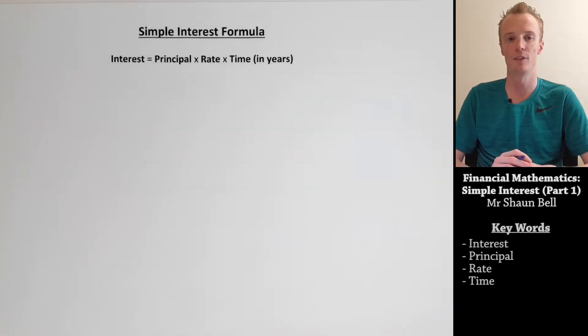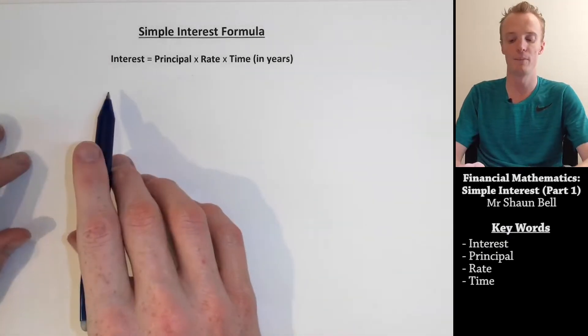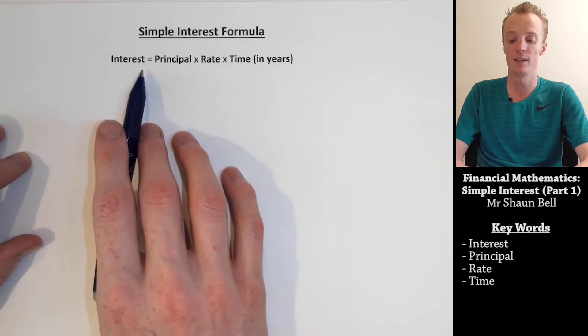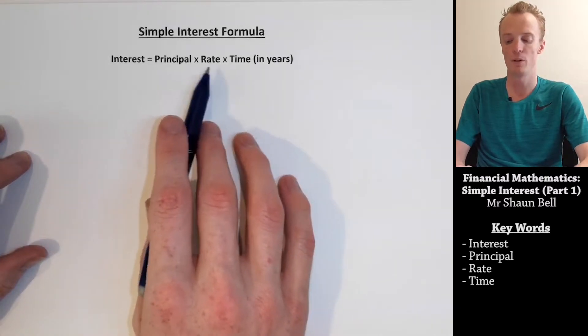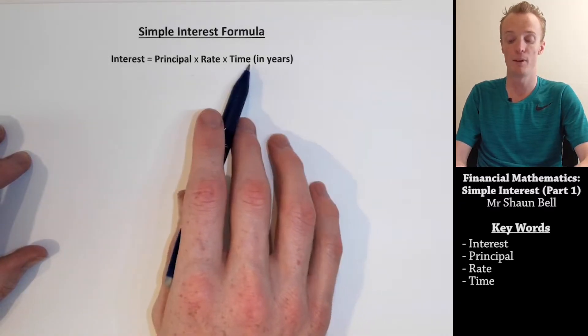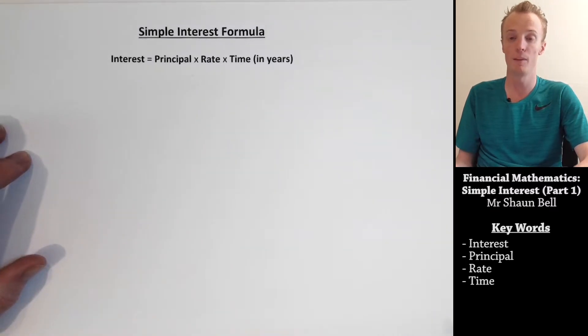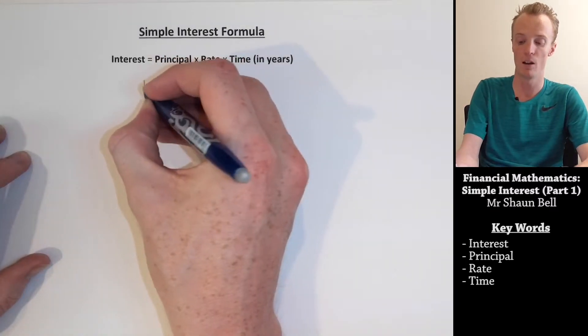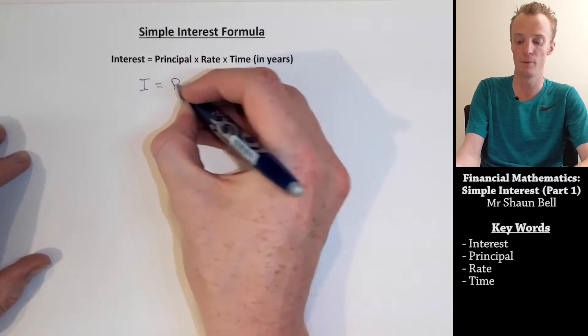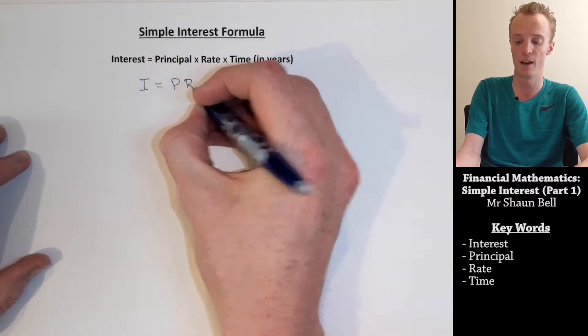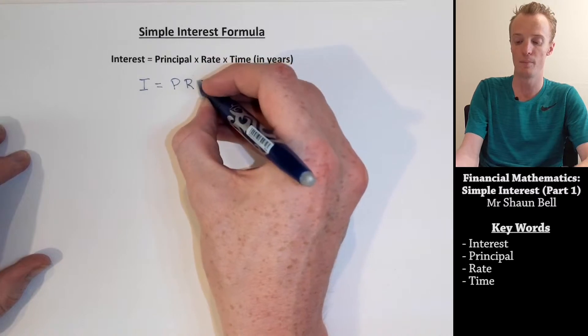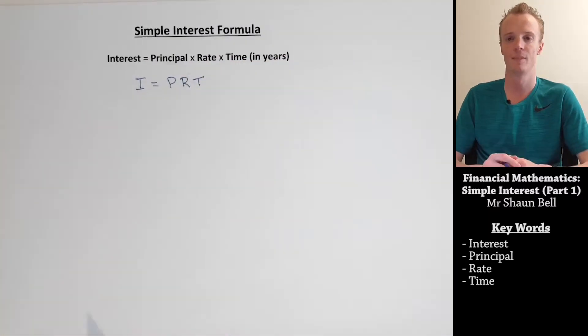To calculate simple interest, we use the formula represented here, where the interest is equal to the principal multiplied by the rate multiplied by time. We can represent this formula as I equals P for principal multiplied by R for rate multiplied by T for time. So, let's start breaking down some of these terms.